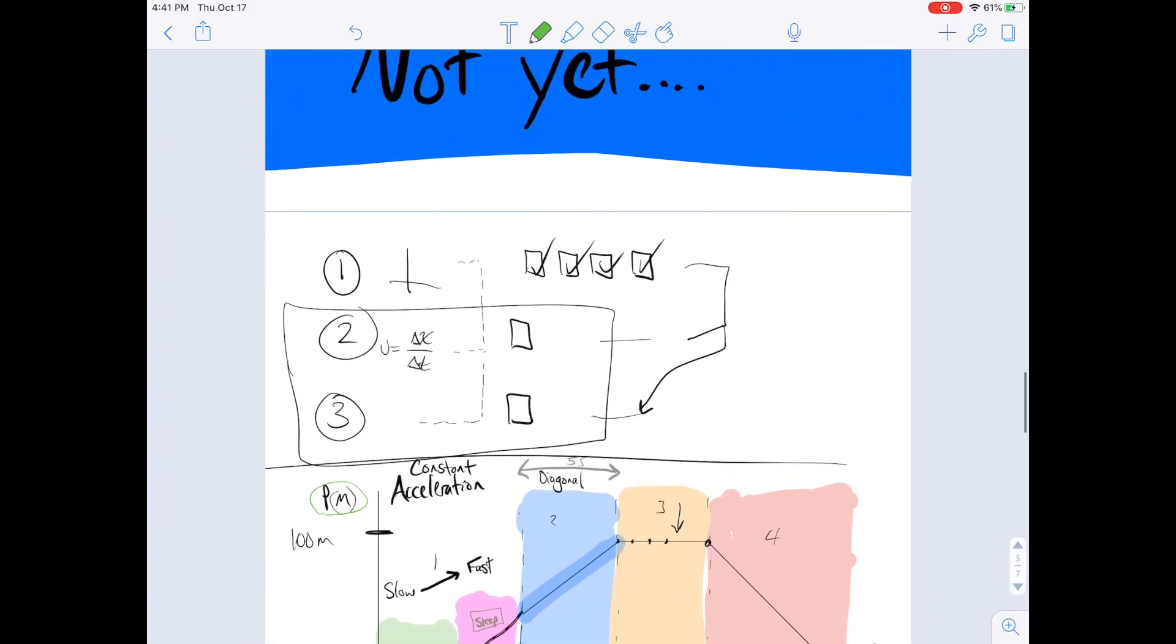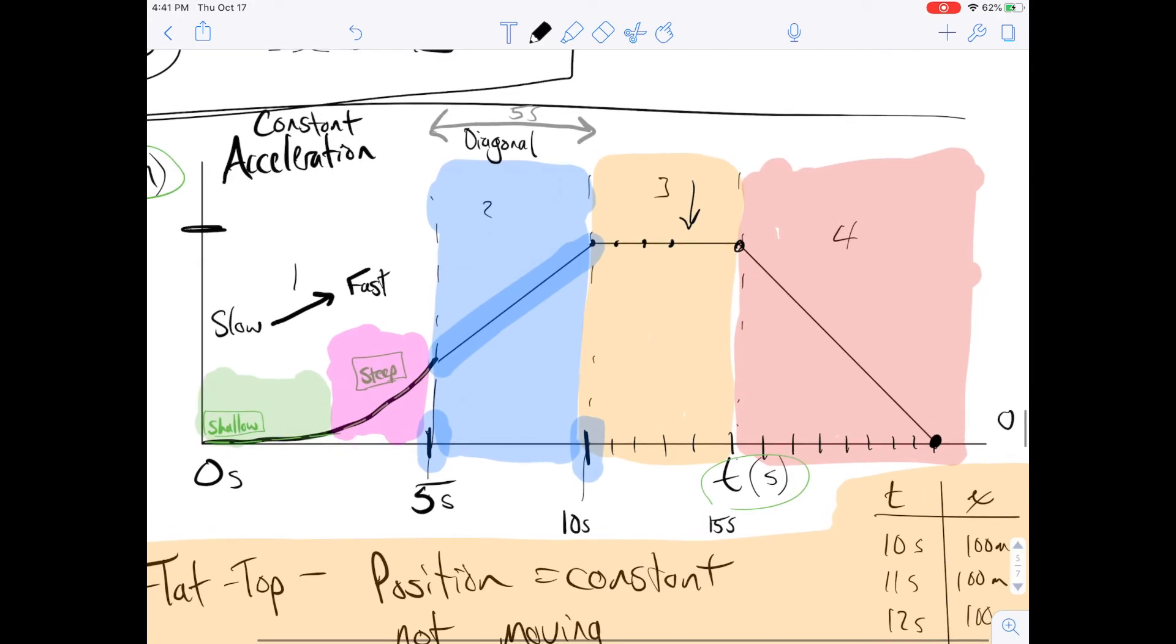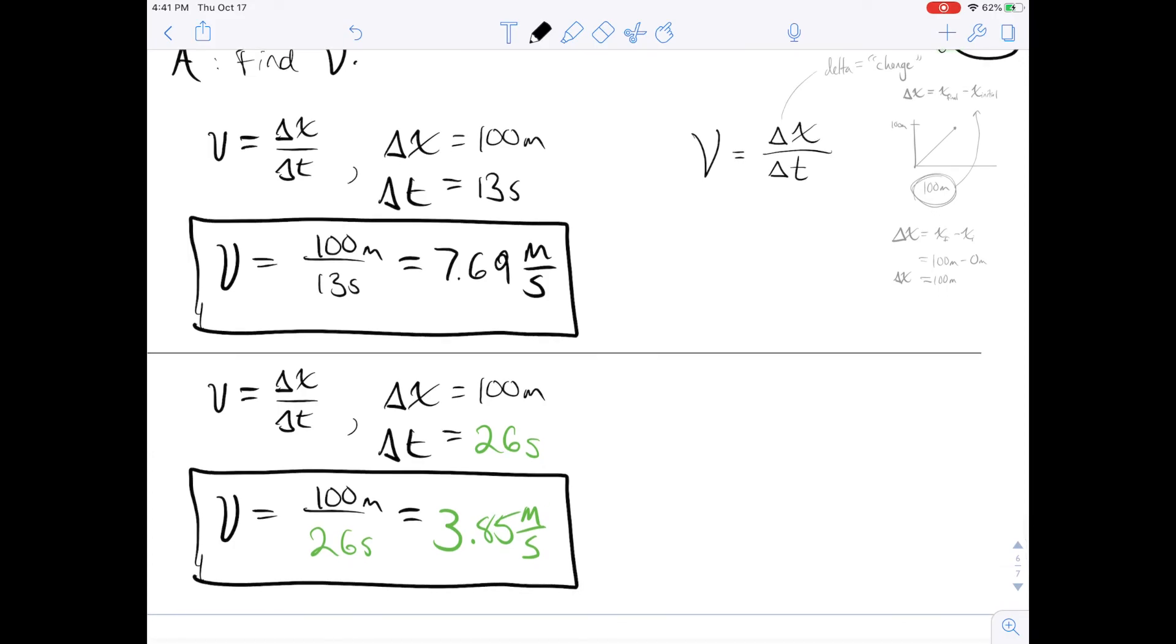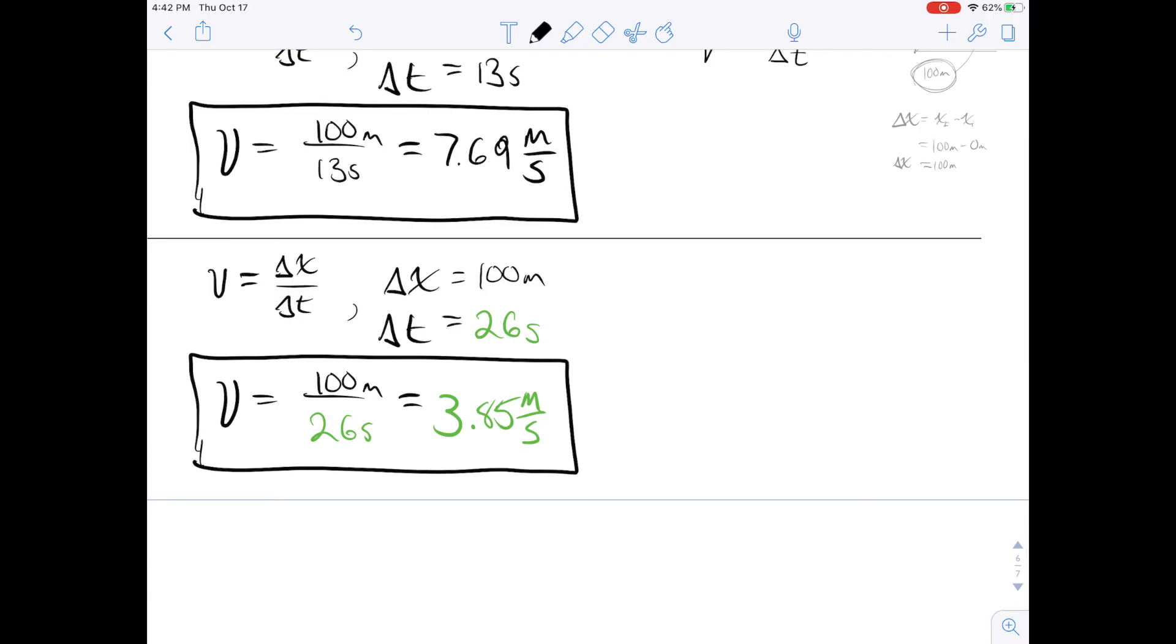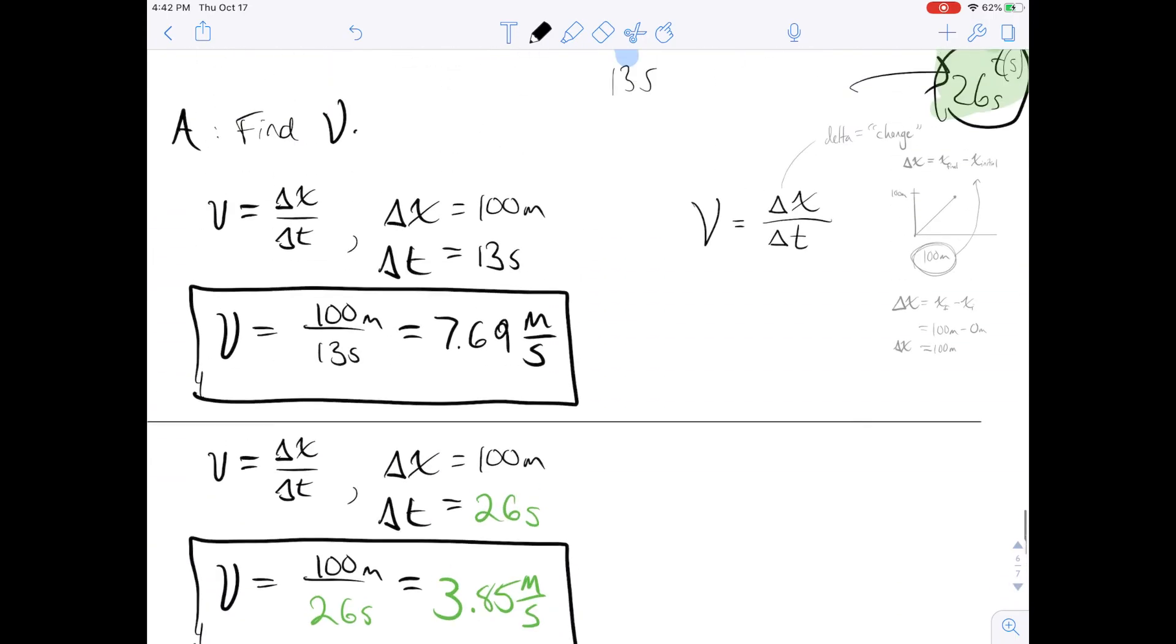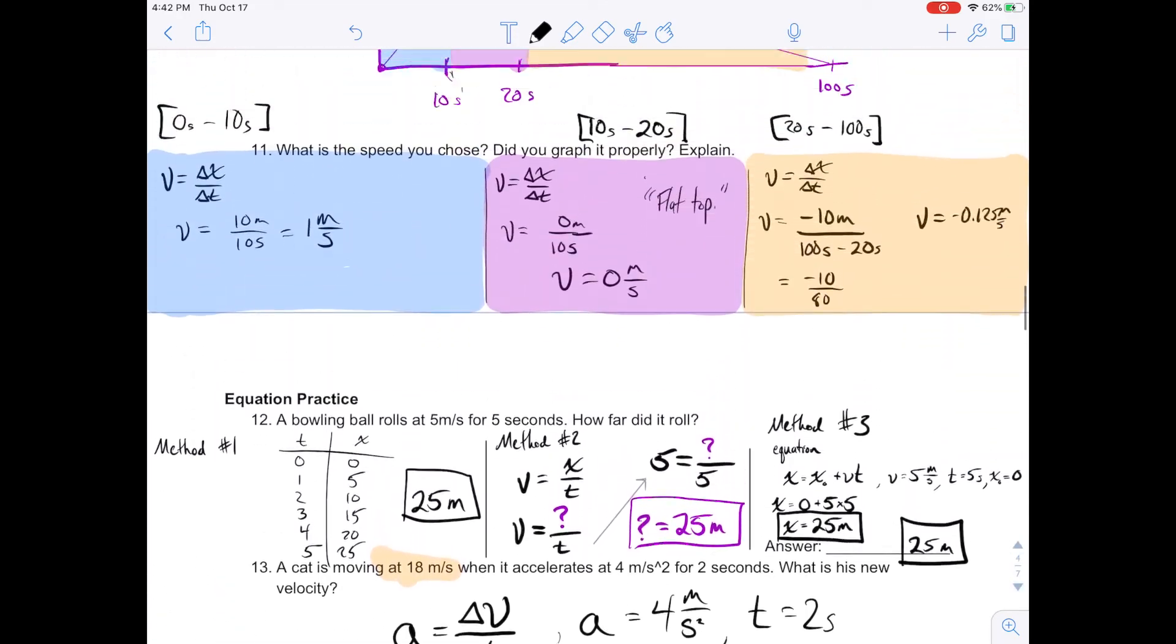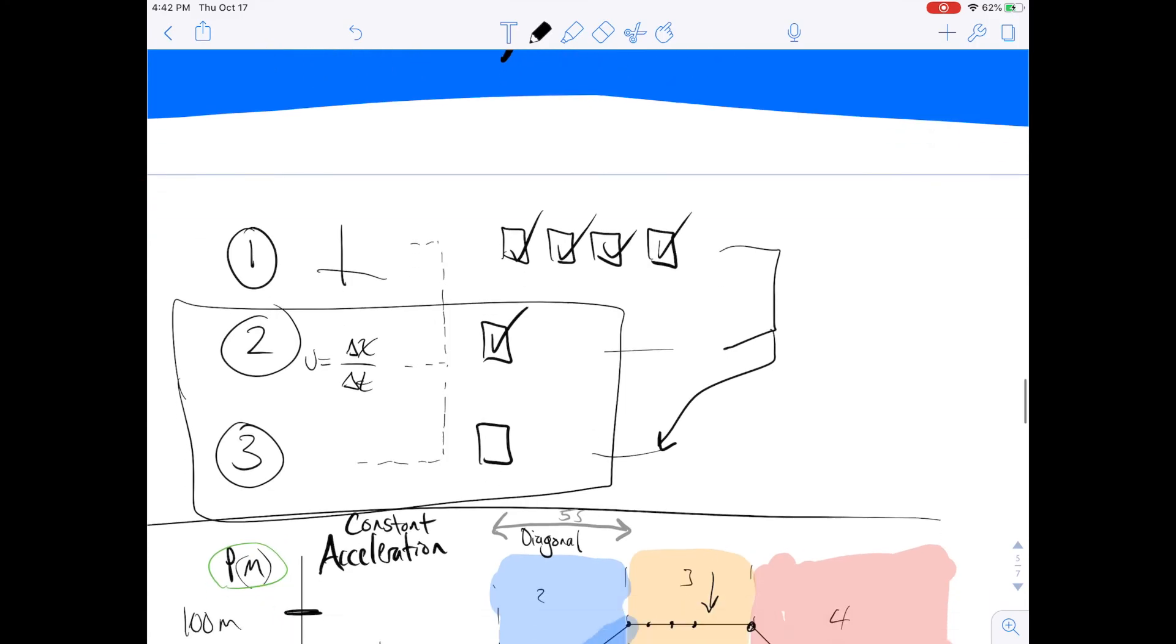So now we've gone through our four examples of different ways that we can have position versus time graphs. Then we've talked about individual calculation examples that were based on graphs. Now the last thing that we need to do is we need to synthesize them. So there was one particular problem, and I don't know if I'll walk through an entire new problem. No, I'll walk through an entire new problem.